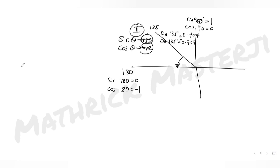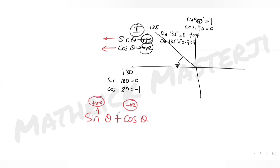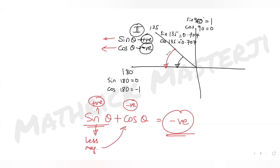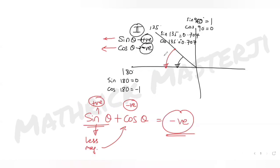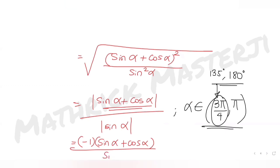From 135° to 180°, sin θ is positive but of smaller magnitude than |cos θ|, so sin α + cos α is negative in this range. Therefore |sin α + cos α| = −(sin α + cos α), and since sin α is positive, |sin α| = sin α. So y(α) = −(sin α + cos α)/sin α.